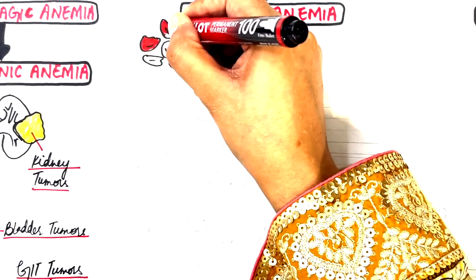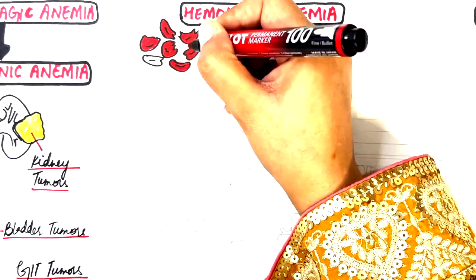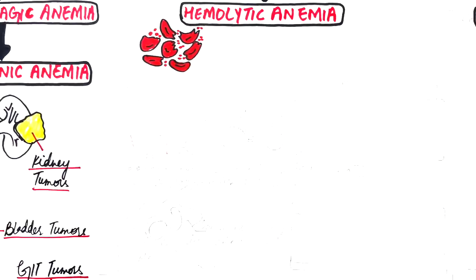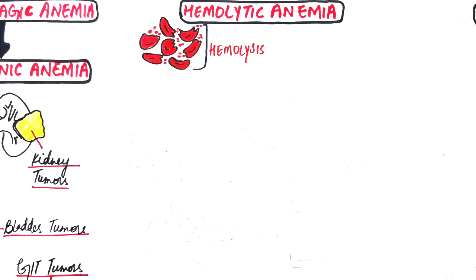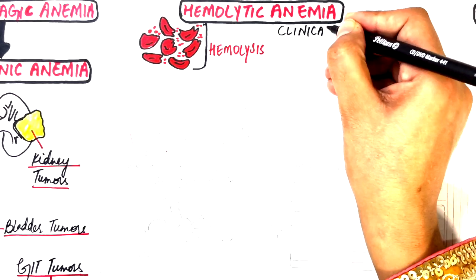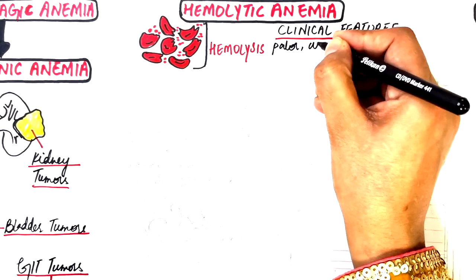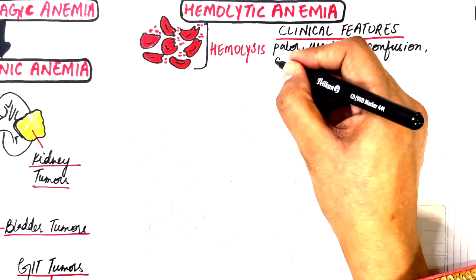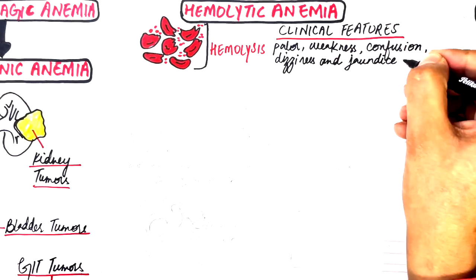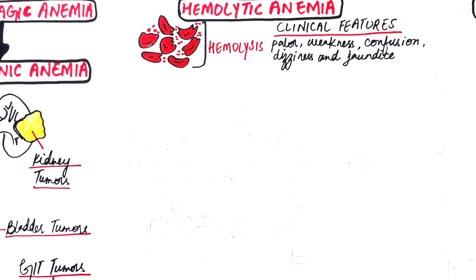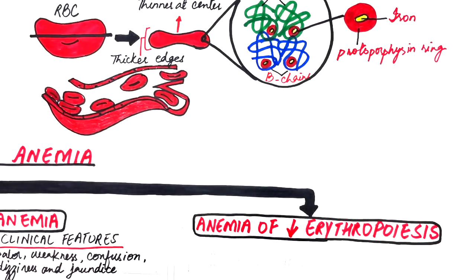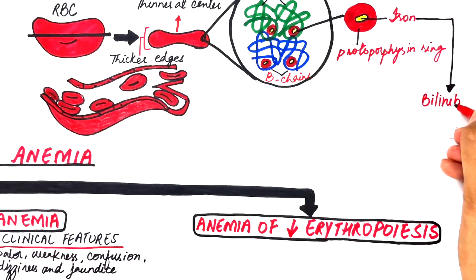Hemolytic anemia results from hemolysis, where red blood cells are broken down before they are supposed to. The clinical features of all hemolytic anemias are almost the same: pallor, weakness, confusion, dizziness, and jaundice. Jaundice is caused by the buildup of bilirubin, an orange-yellow pigment formed in the liver by the breakdown of hemoglobin.